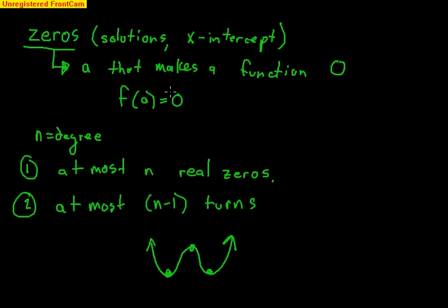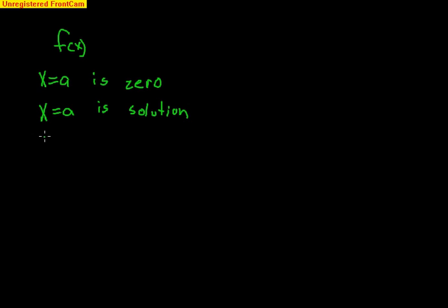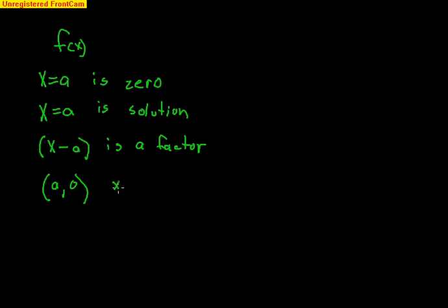It's important to understand what a zero is. For a function f(x), we say x equals a is a zero if you plug in a and get zero. We say x equals a is a solution if you plug it in and get zero. We also say x minus a is a factor — a factor means it goes into the polynomial with a remainder of zero. And the point (a, 0) would be the x-intercept.